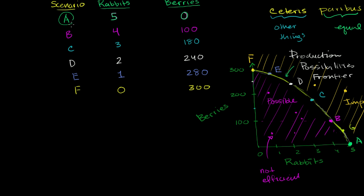We've already spent a lot of time thinking about these six different scenarios, all of which sit on the production possibilities frontier, which means that in any of these scenarios, we have achieved productive efficiency.